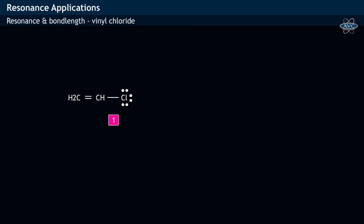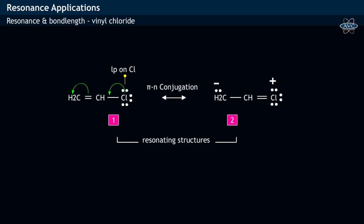In vinyl chloride, the lone electron pair on chlorine which is in conjugation with the pi bond involves in resonance and thereby results in the formation of resonance structure two. As the vinyl molecule involves in resonance, a single bond attains a double bond character.